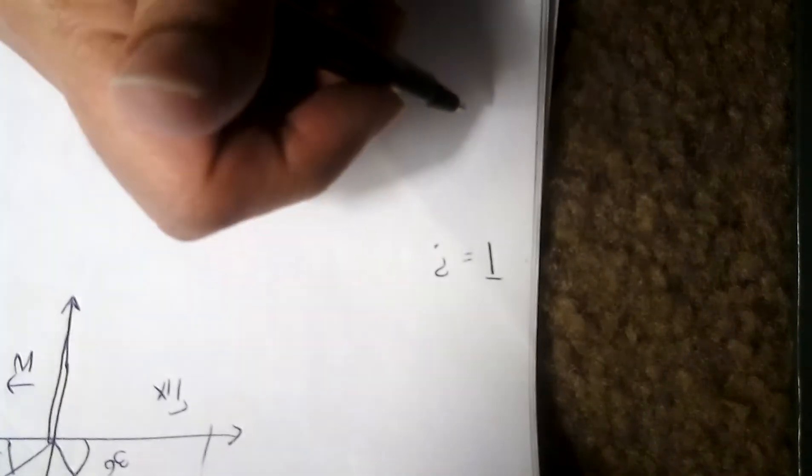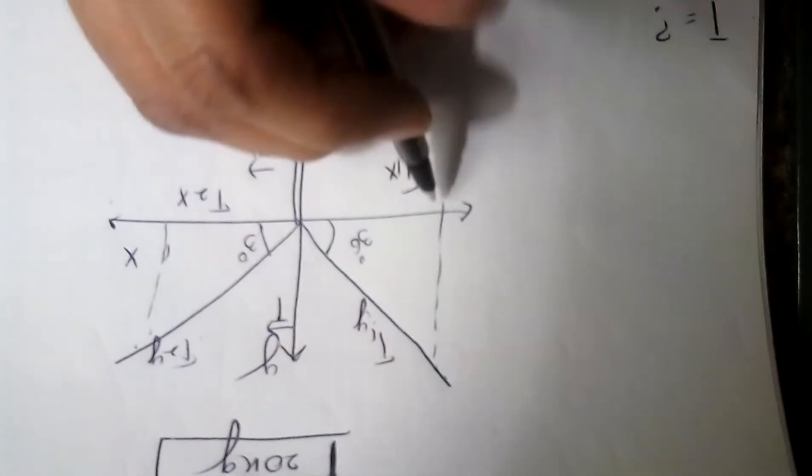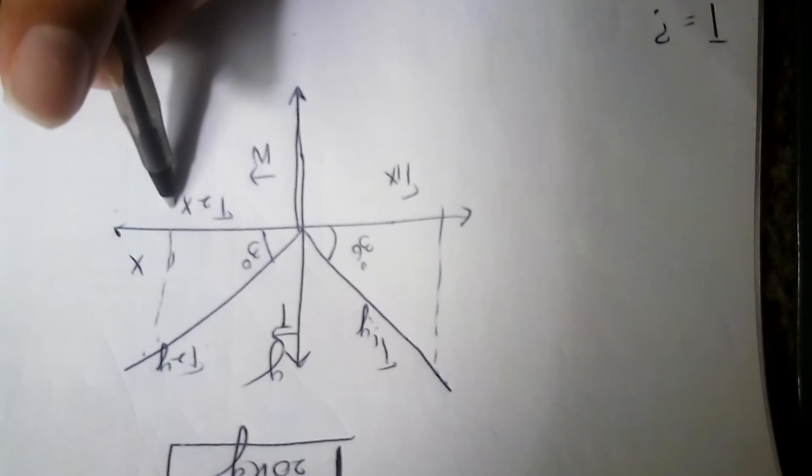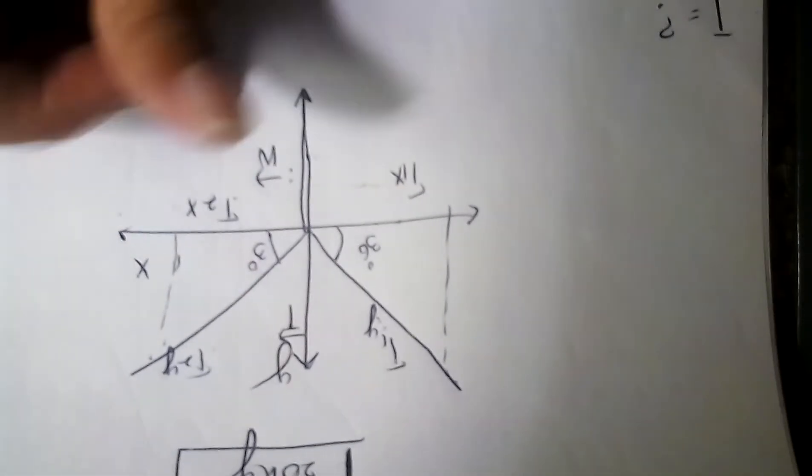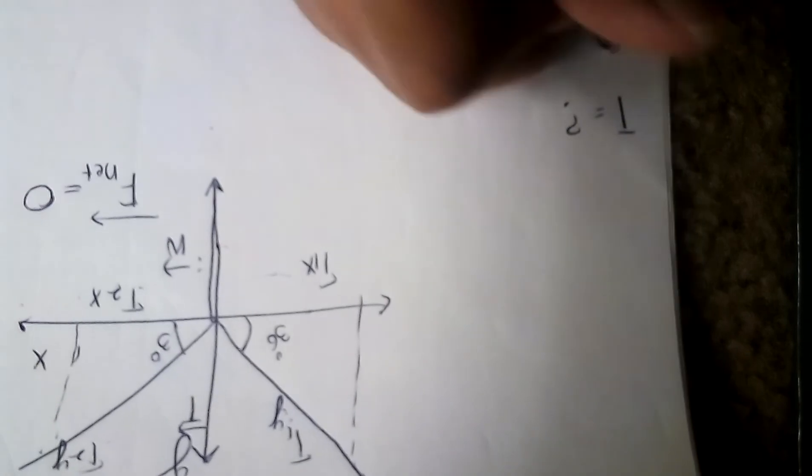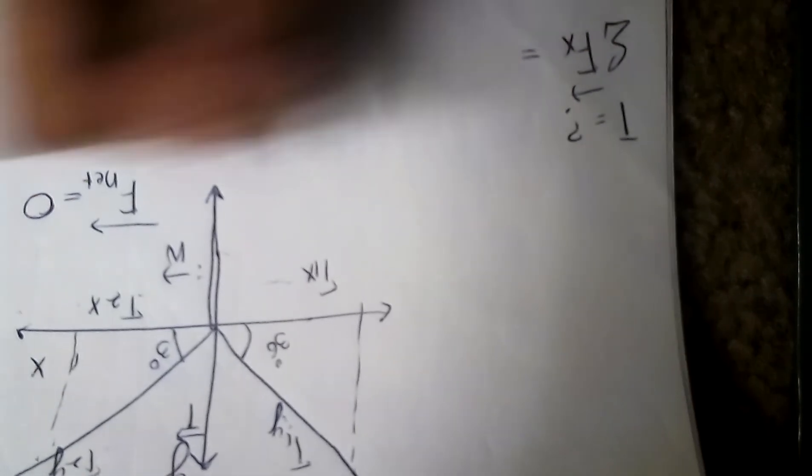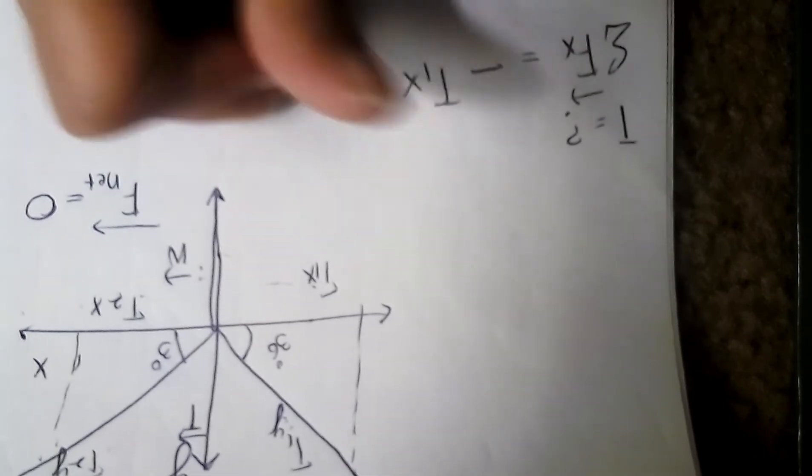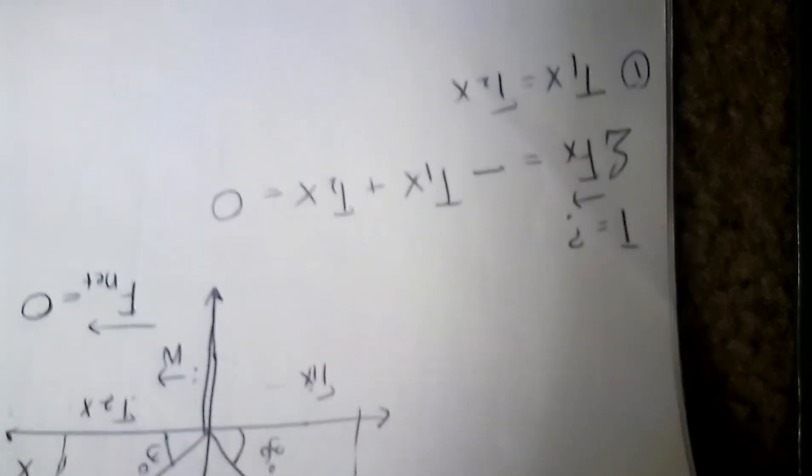We have to find the tension. If we just look at our diagram, on the x-axis we just have to sum up all the forces. Since there are just two forces, it will be equilibrium and the F net will be zero. Sum of all the forces acting on the x-axis: that will be negative T1x plus T2x equals zero. T1x equals T2x. This is the first equation.